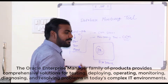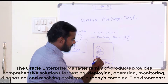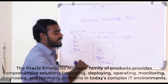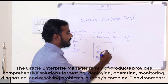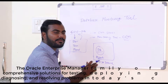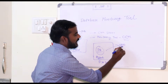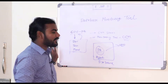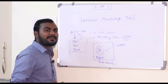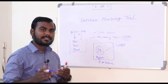We basically install an agent, and the agent will take care of all the databases. It will send the information of the databases and all the database servers to the OMS (Oracle Management Server). From there itself, we will come to know that out of 500 databases, how many are up and running.